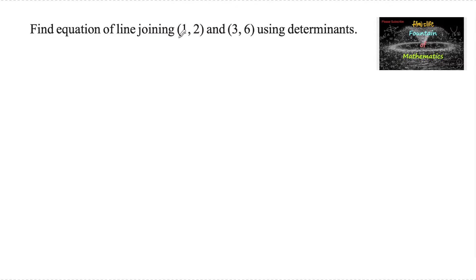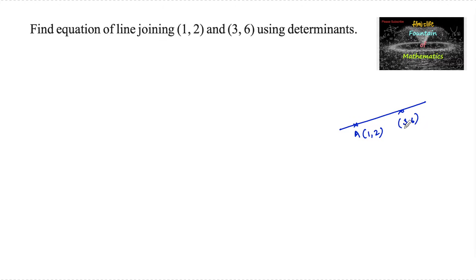Find the equation of the line joining (1,2) and (3,6) using determinants. Let us consider a line passing through the points (1,2) and (3,6). We need to find the equation of the line joining these two points using determinants, so we shall use the concept of collinear points.